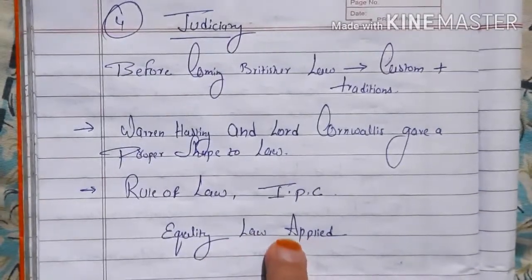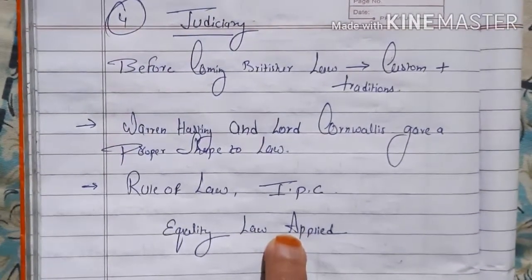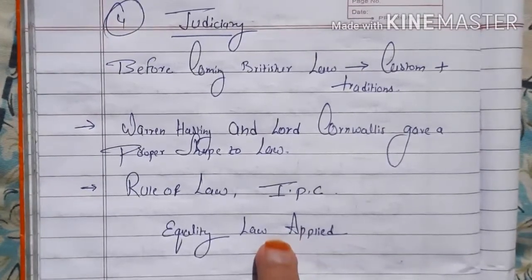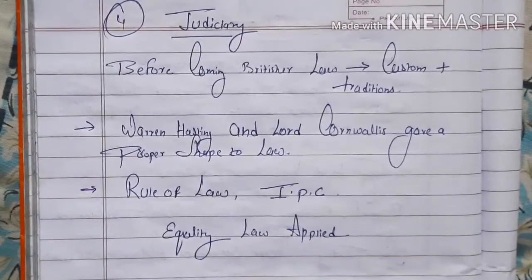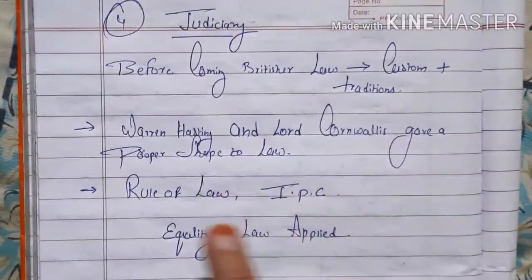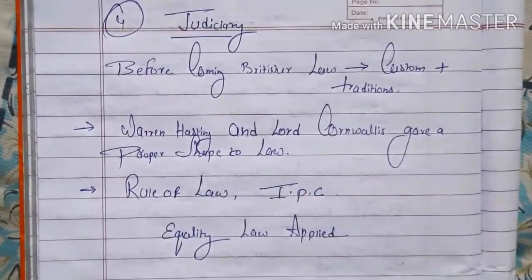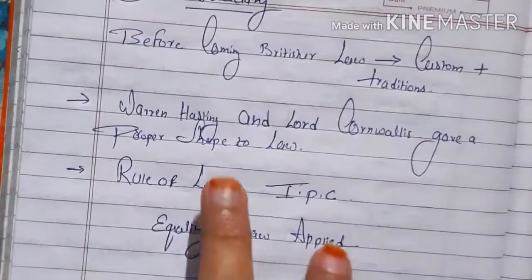The principle of equality was established — the law applied equally to all. The British started this law system, and it continues to be followed. The Constitution was shaped by the British. Warren Hastings and Lord Cornwallis played a major role in shaping the judiciary and establishing a proper law system.